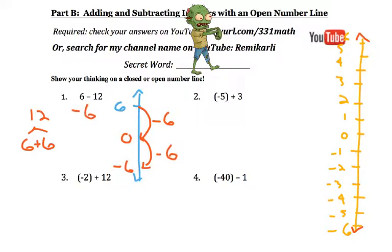And again, if it's tricky on the open number line, use a closed one. 1, 2, 3, 4, 5, 6 gets us to 0, 7, 8, 9, 10, 11, 12 lands us at negative 6.